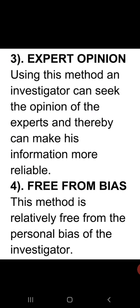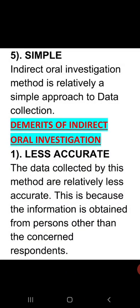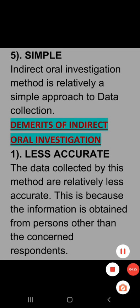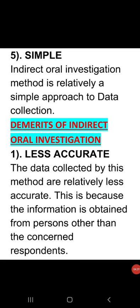Number three — expert opinion. In this method, the investigator seeks the opinion of the expert and transfers information with their help. Number four — free from bias. There is no partiality because the person giving information is free from every personal bias. Number five — simple. The indirect oral investigation method is a relatively simple approach to collect data, whereas direct personal investigation method, though direct, is a costlier affair.